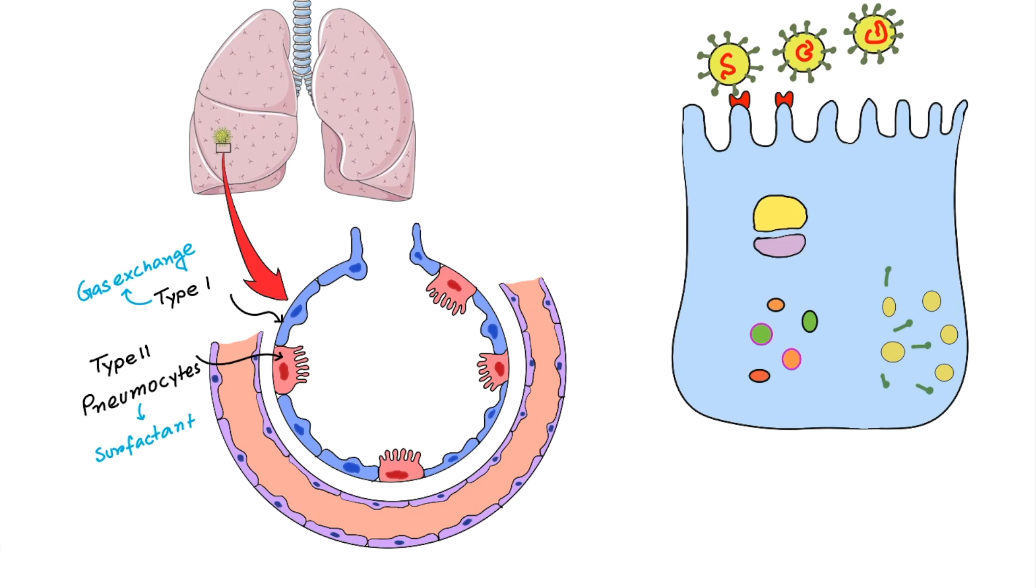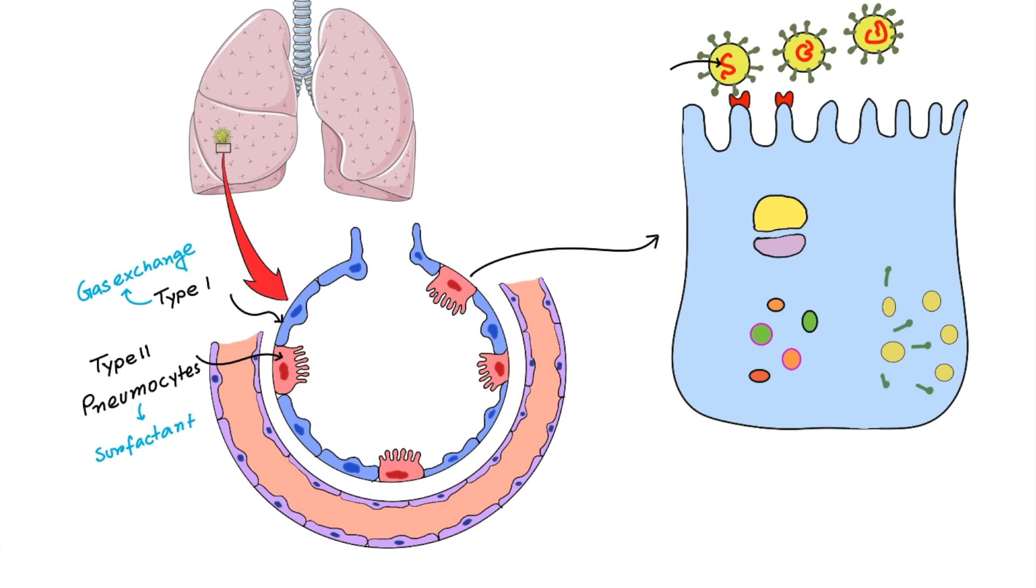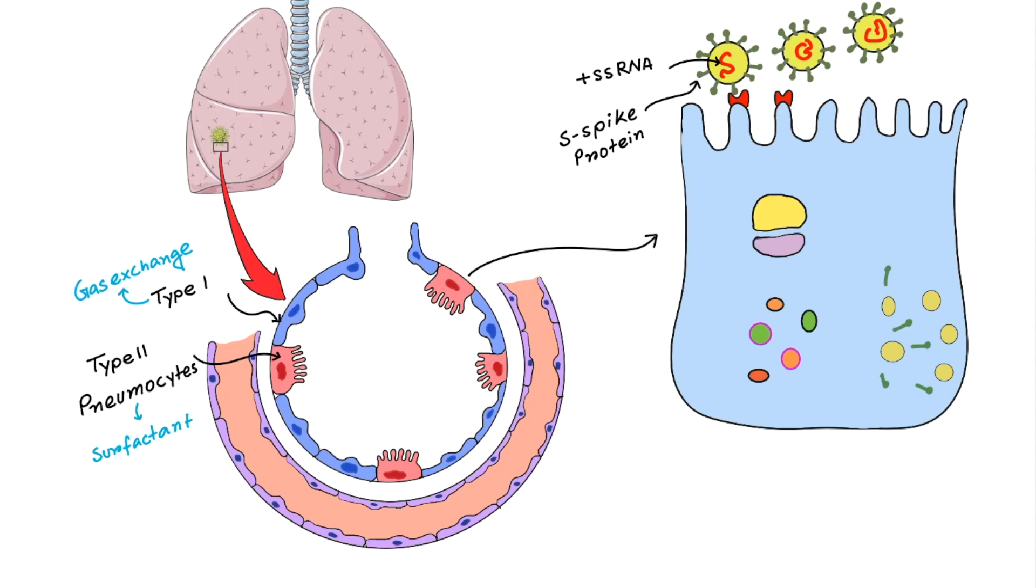COVID-19 virus mainly attacks the type 2 pneumocytes. Here I have drawn a type 2 pneumocyte, here this is the virus. This virus have different types of spike proteins on it and a positive sense single-stranded RNA. Among these, some spike proteins are very important like S-spike proteins because it can attach with the receptors present on the type 2 pneumocytes. These receptors are called ACE type 2 or angiotensin converting enzyme type 2. These receptors help the virus to get into the cells.